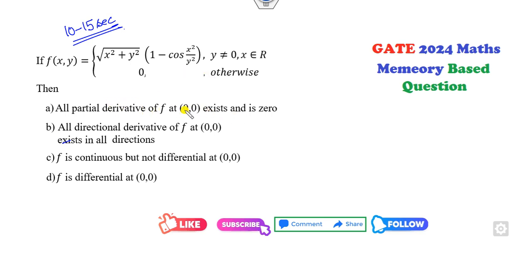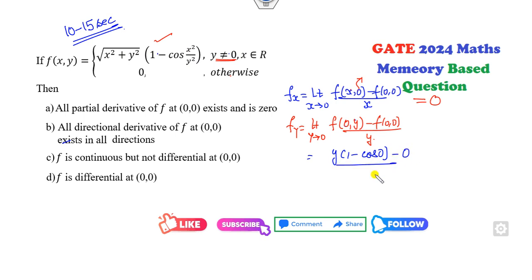Firstly, how can you see the partial derivative of f at (0,0) exists or not? The definition is: limit as (x,0) approaches (0,0) of [f(x,0) - f(0,0)] / x. This is the definition of fx. When y is 0, the answer is 0 - 0 = 0. Can you find the partial derivative with respect to y? It will be [f(0,y) - f(0,0)] / y. Since y is non-zero, when x is 0 it will be y(1 - cos(0)). f(0,0) is 0, so y will be cancelled. Cos(0) will be 1, so 1 - 1 = 0. Yes, both partial derivatives exist and they are 0.